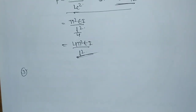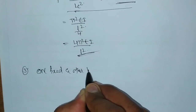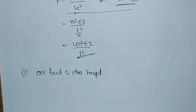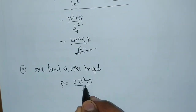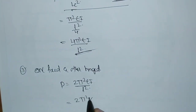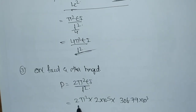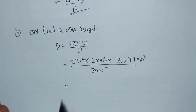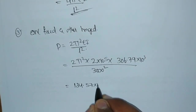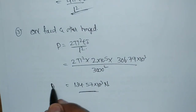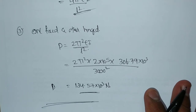The next condition is one end is fixed and the other end is hinged. If one end is fixed and the other is hinged, the formula is P is equal to 2 Pi squared EI by L squared. We know the values: 2 Pi squared into E value 2 into 10 to the power of 5, and I value 306.79 into 10 to the power of 3.